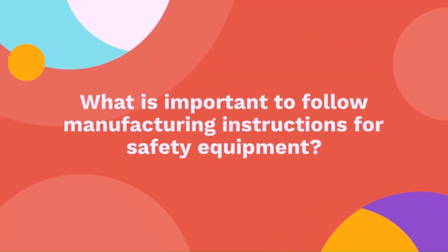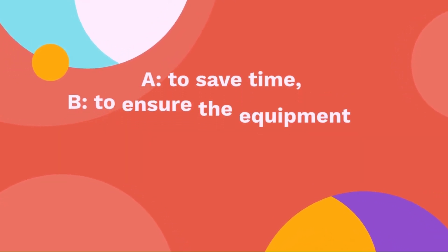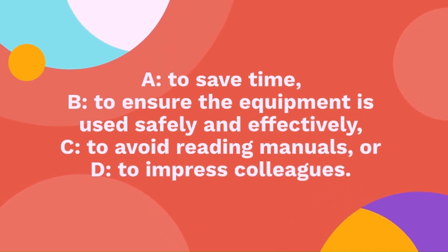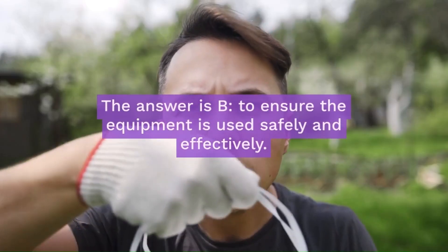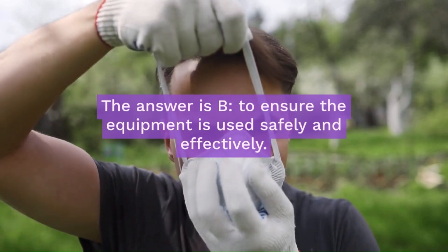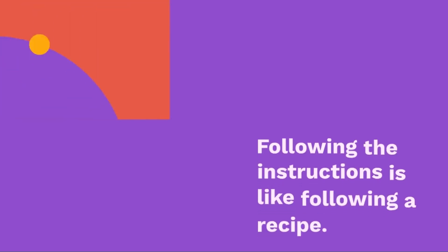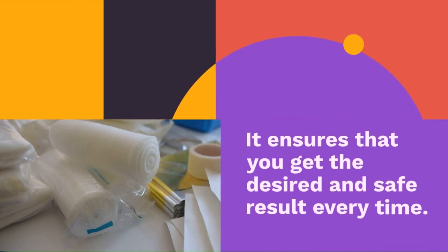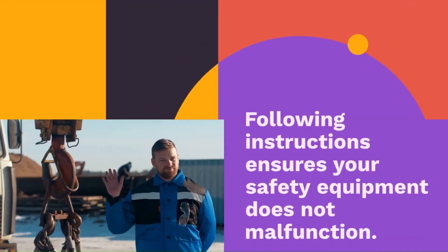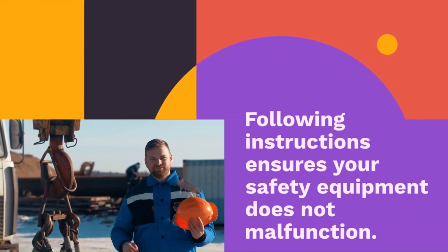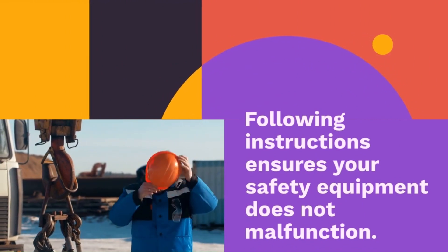Question 20: Why is it important to follow manufacturer's instructions for safety equipment? The options are: to save time, to ensure the equipment is used safely and effectively, to avoid reading manuals, or to impress colleagues. The answer is to ensure the equipment is used safely and effectively. Following the instructions is like following a recipe — it ensures you get the desired and safe result every time. Following instructions ensures your safety equipment does the right thing.